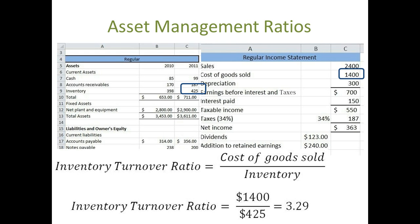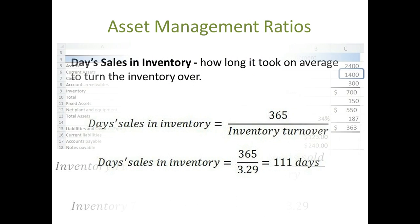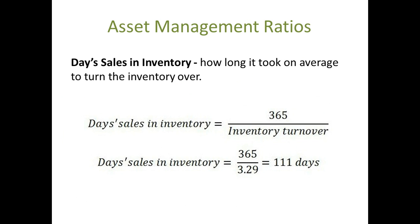Once you have the Inventory Turnover Ratio, you can then figure out how long it took on average to turn the inventory over. You would do this with a ratio called the Days Sales in Inventory. This ratio is calculated by using 365 divided by the Inventory Turnover Ratio. Therefore, our Days Sales in Inventory would be 365 divided by 3.29, equaling 111 days. This ratio says the inventory sat for 111 days.